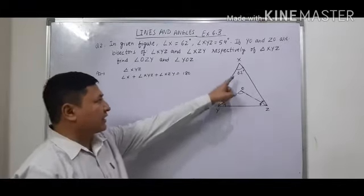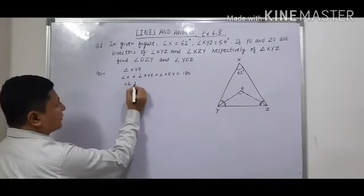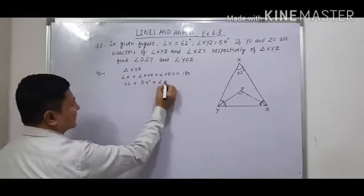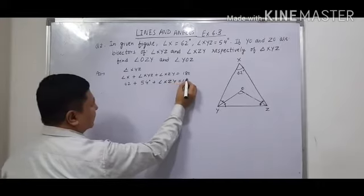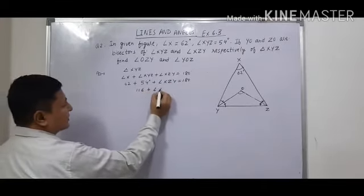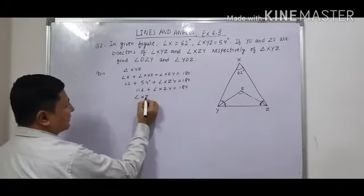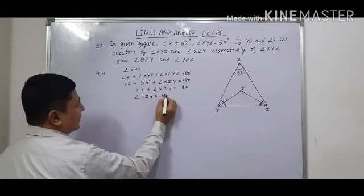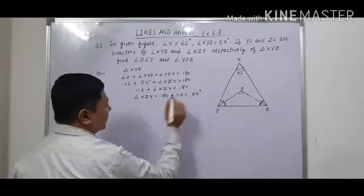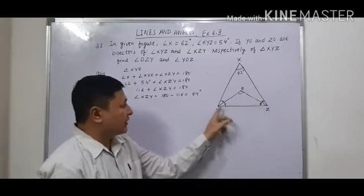The reason is that the sum of all angles of a triangle is 180 degrees. Angle X is 62 degrees, plus 54 degrees for angle XYZ, which gives 116 degrees, plus angle XZY is equal to 180 degrees. Therefore angle XZY is equal to 180 minus 116, which is 64 degrees.